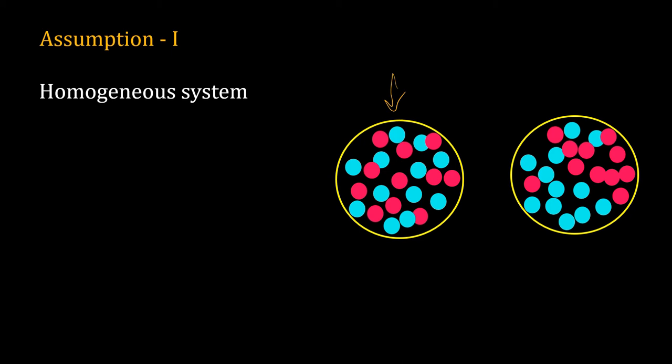Our rate equation will have only one independent variable: time. But in the other cell, you can easily notice a gradient. Red molecules are more on this side. That means the concentration of molecules depends upon the position inside the cell. So the rate of reaction will also depend on location.